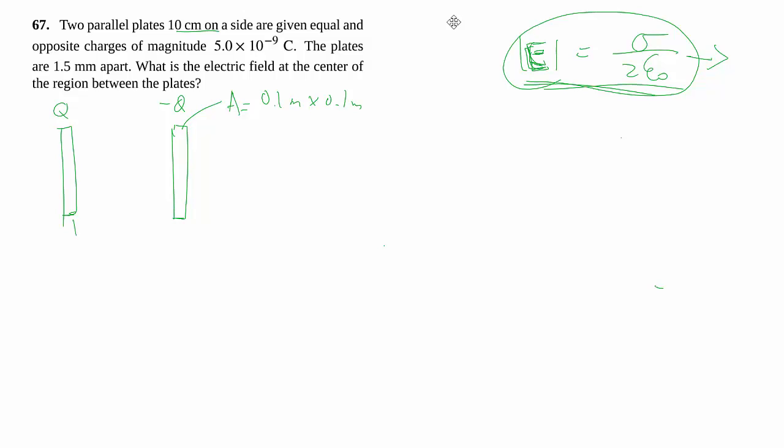And they have opposite charge, so this is Q and that's negative Q. The plates are a certain distance apart. Usually that matters really little because, again, the field is uniform no matter how far away you are. And they want the electric field at the center of that region, so at this particular point, what is E?